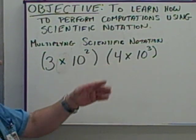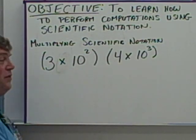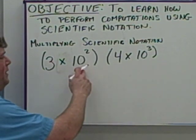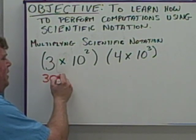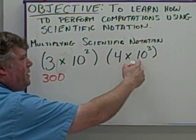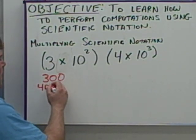So when it comes to multiplying scientific notation, let's take a look at this particular problem. If I was to do this the long way, I would make this 3 times 10 times 10, which would become 300. I'd be multiplying that by 4 times 10 times 10 times 10, which is 4,000.